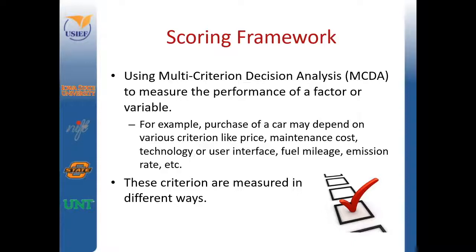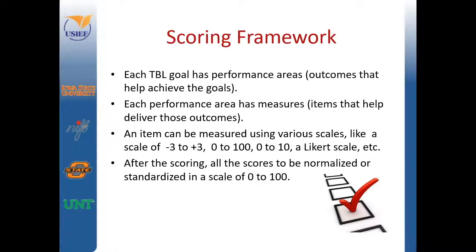For example, purchase of a car may depend on various criteria like price, maintenance cost, technology, user interface, fuel mileage, emission rate, and so on. These criteria are measured in different ways. Each triple bottom line goal has performance areas — outcomes that help achieve the goal. Each performance area has measures, or items that help deliver those outcomes. An item can be measured using various scales like a scale of negative 3 to positive 3, 0 to 100, 0 to 10, a Likert scale, or others. After scoring, all the scores can be normalized or standardized on a scale of 0 to 100.